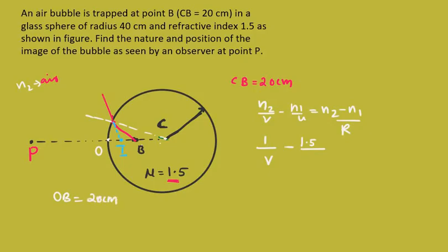Since we are measuring from O to B and it is against the direction of the incident ray, you can see OB is against the direction of incident ray, so OB will be negative.